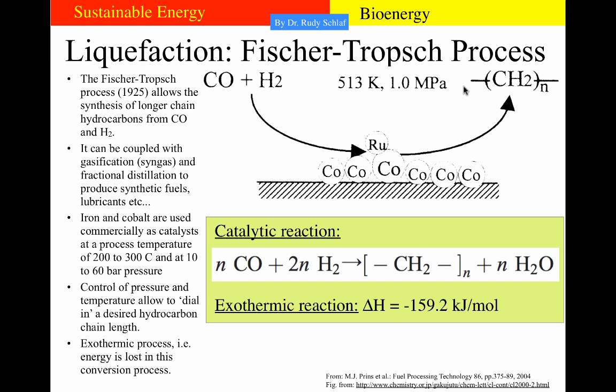The third thermochemical conversion process is liquefaction. The most prominent method is the Fischer-Tropsch process, developed in 1925, which converts carbon monoxide and hydrogen into longer-chain hydrocarbons. This is achieved by putting these two gases in contact with a catalyst at elevated temperatures and pressures, forming hydrocarbon chains. By controlling the pressure and temperature, one can dial in a certain hydrocarbon chain length. This is again an exothermic process, so energy is lost in this conversion.